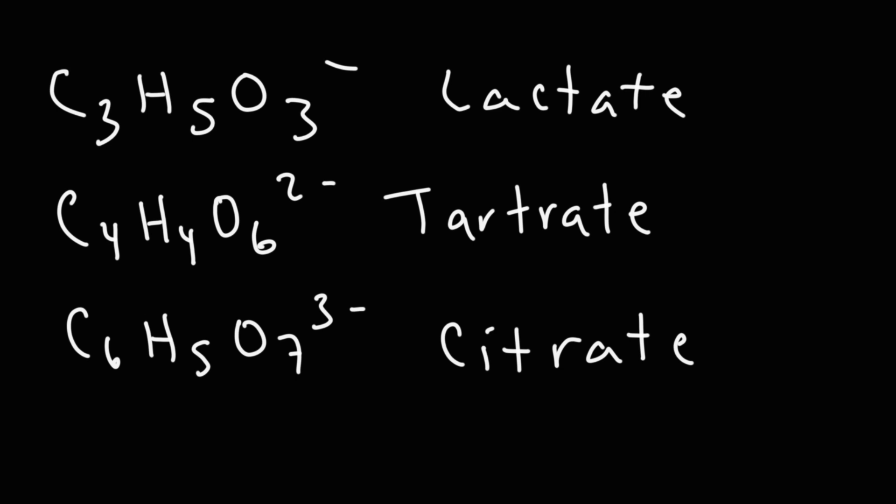These organic polyatomic ions, you may not see them too often in a typical general chemistry course, but some of them you will. You might see benzoate, you might see formate, and in certain acid-base titrations, you might see phthalate, which is C8H4O4. Not all of these are common, but you may see them, especially if you're taking AP chemistry.